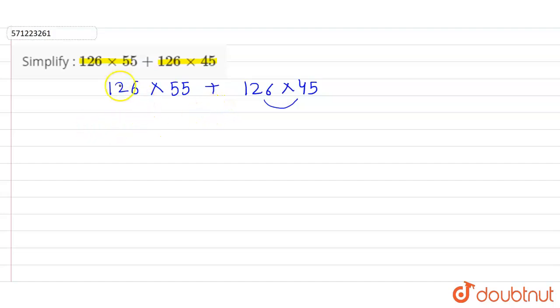So what we can do - if you can observe in this question, 126 is common in both these terms. 126 is common in both these terms, so we can take 126 common from these two numbers.